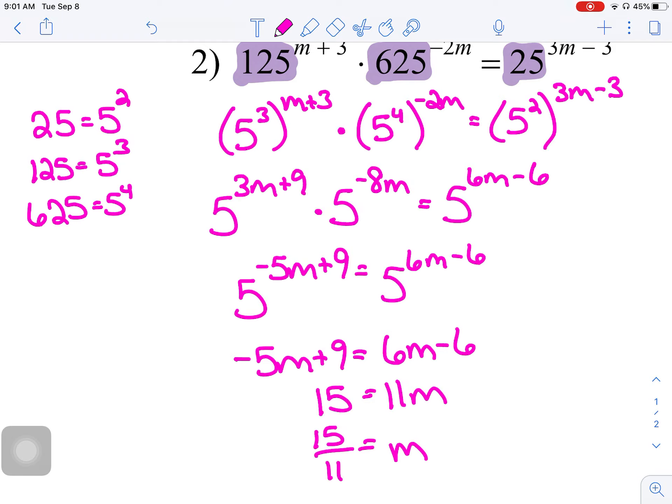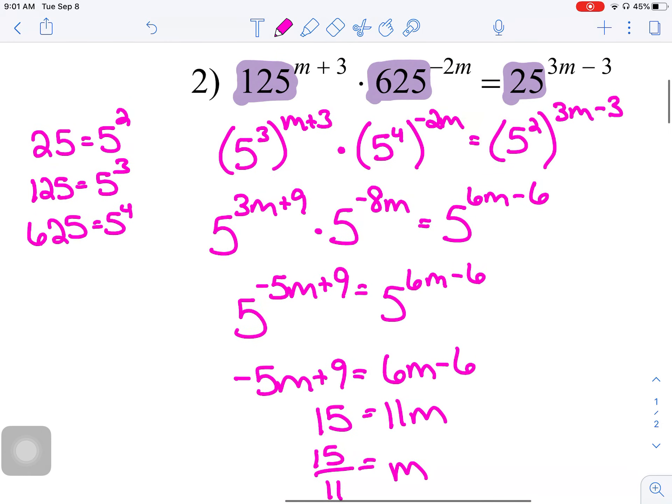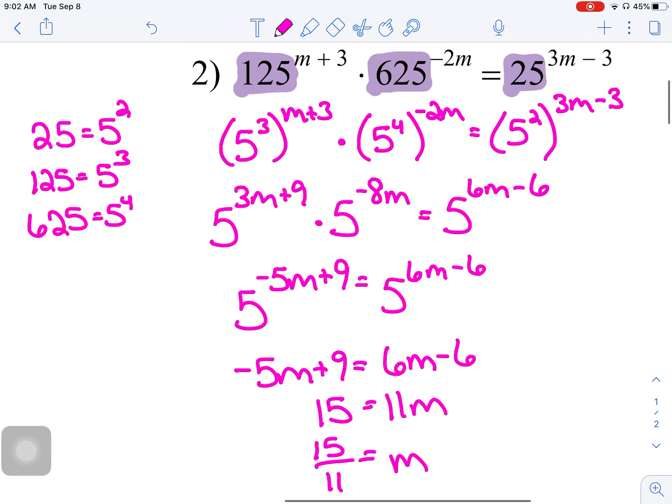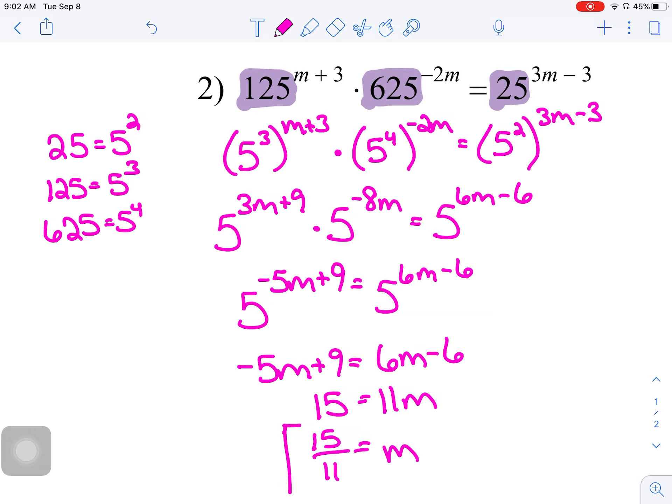And so, I'm going to check that out and see what happens when I substitute that back into the original. Let's make sure I didn't do anything goofy there. Times 625 raised to the negative 2m. Let's make that equal to 25 to the 3m minus 3. And my calculator is hollering at me, but that's because I didn't do my check correctly. All right. Let's try this again. All right. So, that's one of the things where off screen I did a check to make sure that this is, in fact, the correct answer.